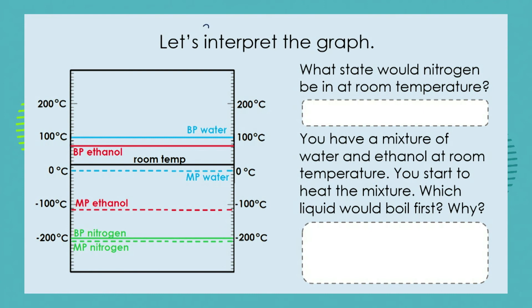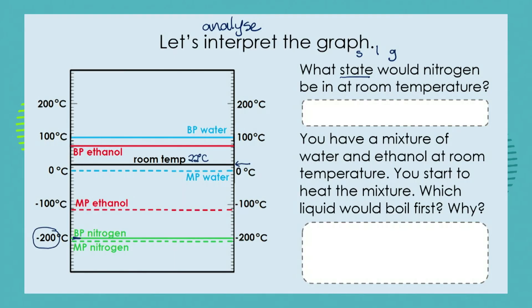Let's interpret the graph and get some important data from it. What state — solid, liquid, or gas — would nitrogen be in at room temperature? Room temperature is on average 22 degrees C. The boiling point of nitrogen, the point at which liquid nitrogen turns into gaseous nitrogen, is minus 200 degrees C. So at room temperature, nitrogen is a gas — which is why we breathe it in and out.